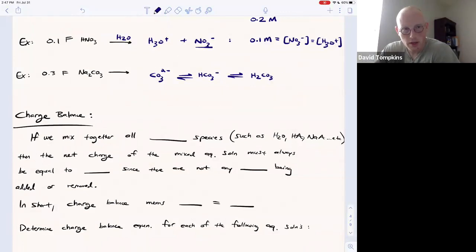There would be two sodium ions complex with carbonate, one sodium ion with bicarbonate and none with carbonic acid. So 0.3 molar is equal to the sum of all carbonate-containing species.